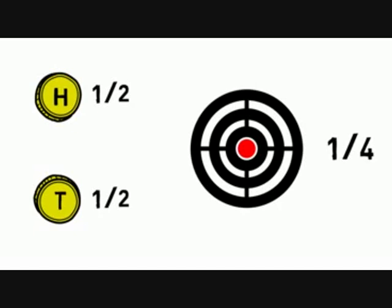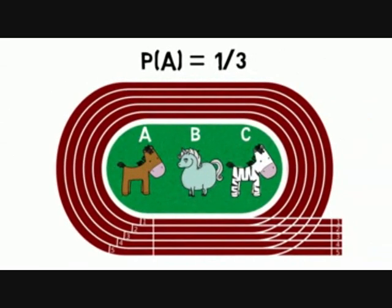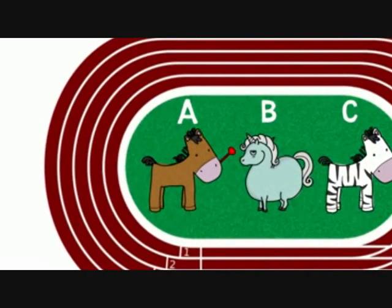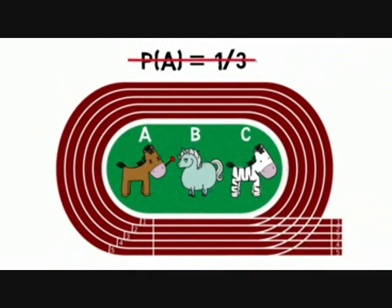Notice, by the way, that the principle of indifference only applies when all you know is what the possible outcomes are. If you have more information than that, for example, if you know that horse A is sick, that changes things. Then the sick horse is less likely to win than the other two. The principle of indifference doesn't apply then. It just tells you what probabilities to start with before you get any relevant information.